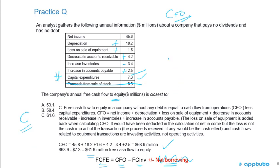This is a good review of calculating CFO via the indirect method — tracking increases or decreases in asset and liability accounts. The proceeds from stock sale were red herring information we didn't need. Since the company has no debt, there were no net borrowings. If we had borrowed money we would add it; if we paid debt back, we would subtract it.